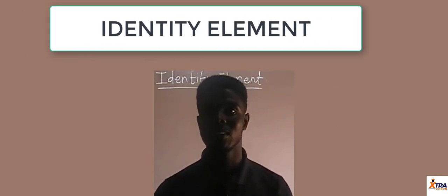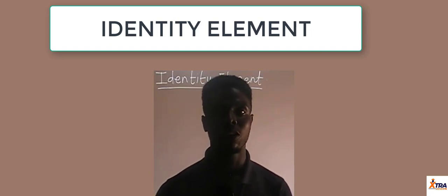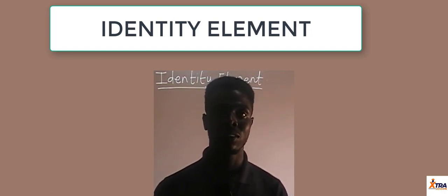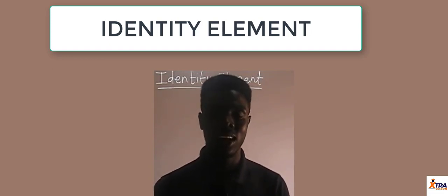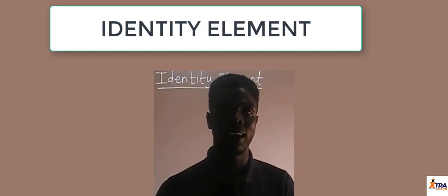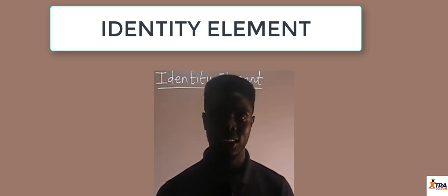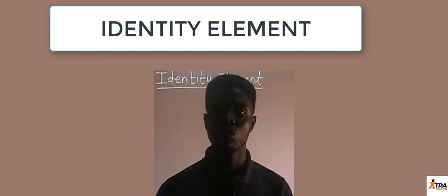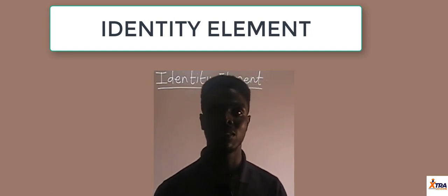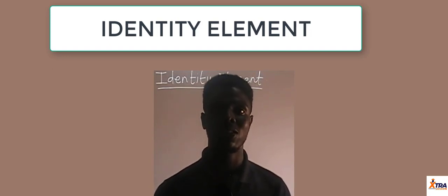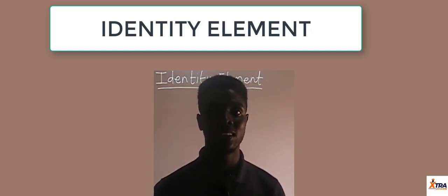The identity element serves as an identity to a binary operation — any operation we are dealing with. It explains the fact that when you have a particular variable in an operation with the identity element, the value you get should be unaffected by the second variable, which is the identity element. In plain words, the identity element is that variable that when combined with the original variable gives you the original variable again. The aim of the identity element is to make the original variable look unaffected by the operation.